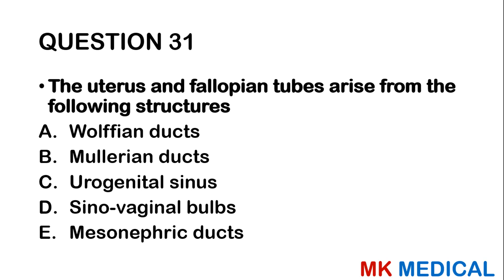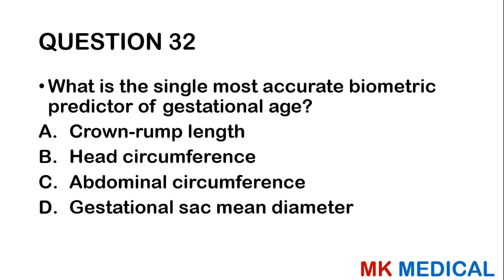Question thirty-one: The uterus and fallopian tubes arise from the following structures. A, Wolffian ducts; B, Mullerian ducts; C, urogenital sinus; D, sinovaginal bulbs; E, mesonephric ducts. They arise from the Mullerian ducts.